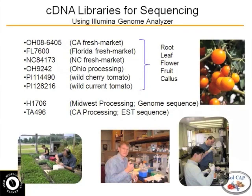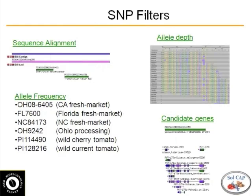Dave already talked about this, but this is what was sequenced with the different fresh market and processing types. We sequenced these varieties using Illumina sequencing — we got about 60 base pairs. We were able to assemble those varieties on their own and also look at the assemblies from ESTs, which basically represent the mRNA — the expressed genes.